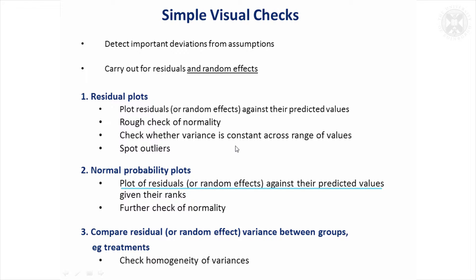The key thing to remember is you need to do these not just for the residuals themselves but also for the random effects. So in the case of a residual plot, you would plot the random effects themselves against their expected predicted values. You also want to check that the residuals and the random effects have the same variance between groups — so you want to check that the variances are similar across different groups.